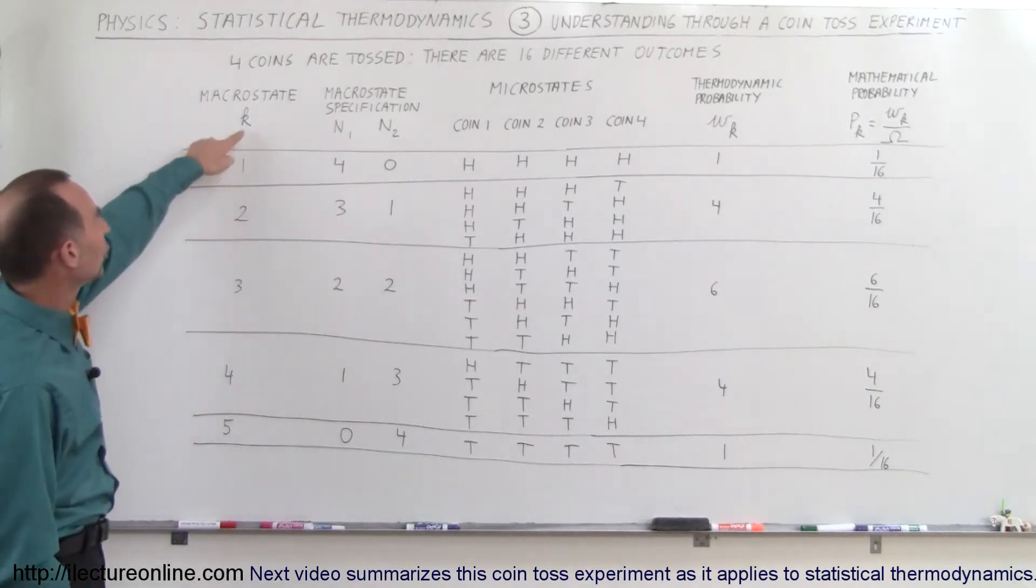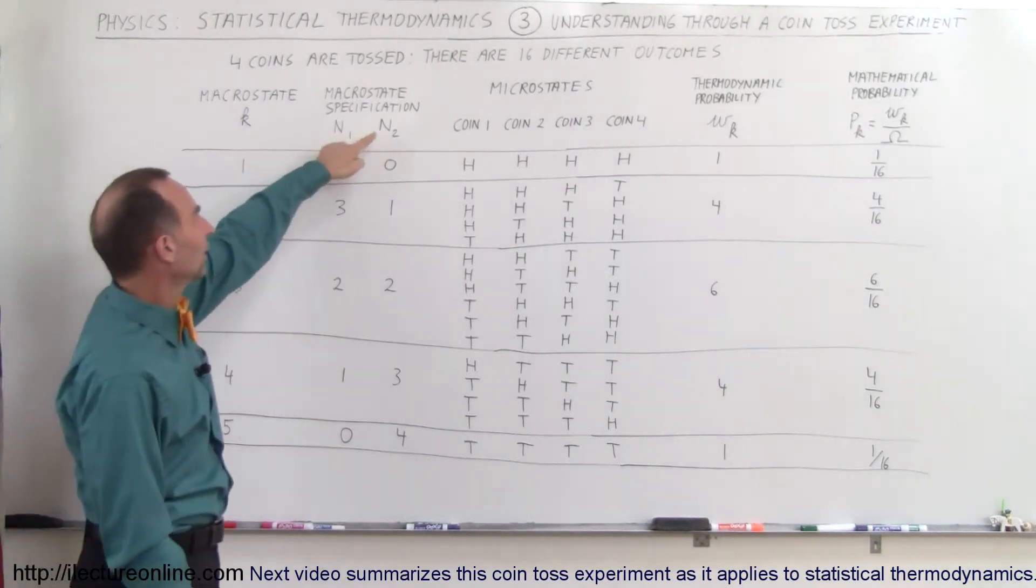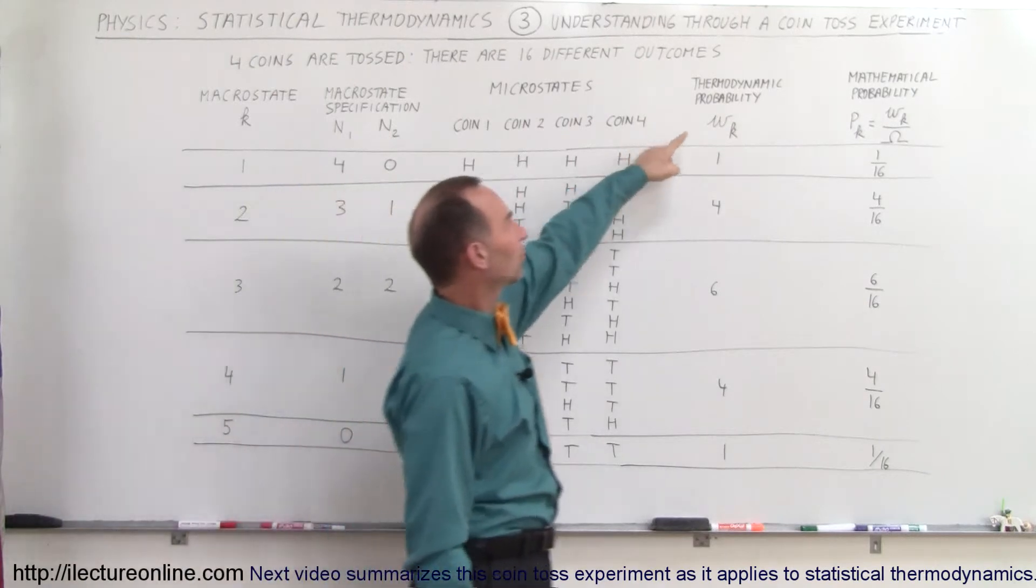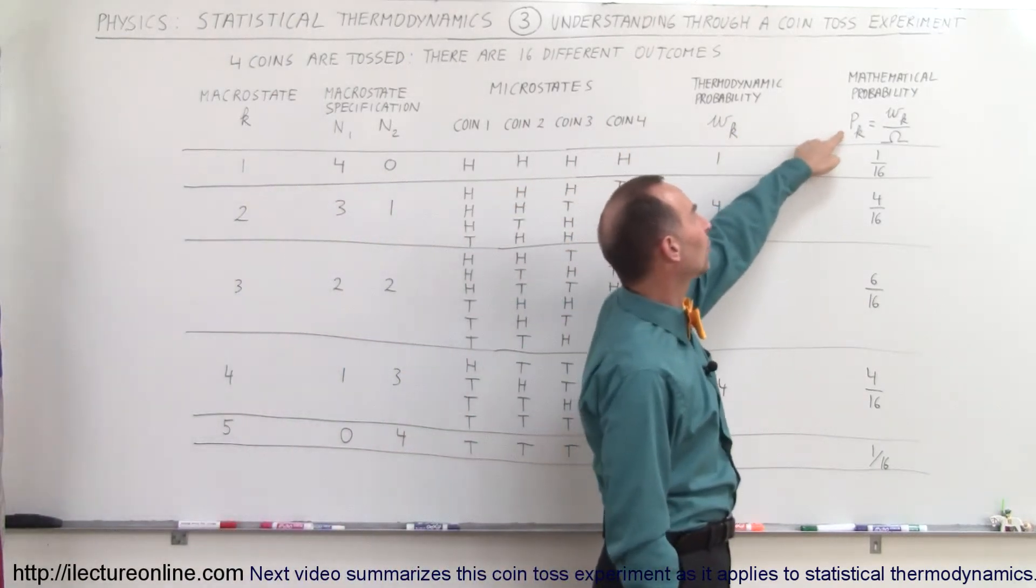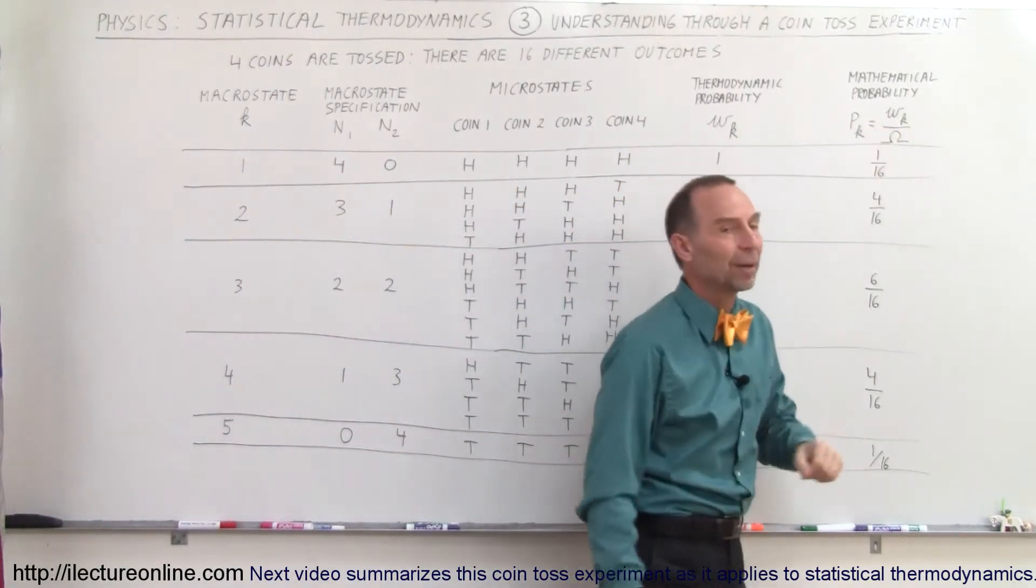Notice that we use the notation k, n sub 1, n sub 2, w sub k, and p sub k, which is equal to w sub k divided by capital omega.